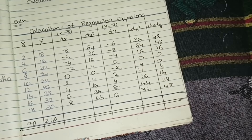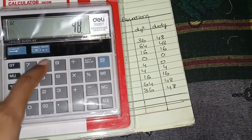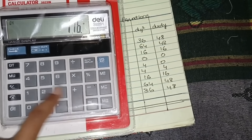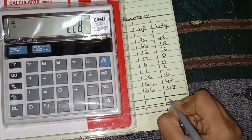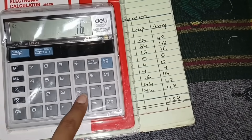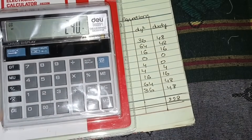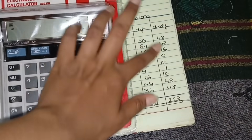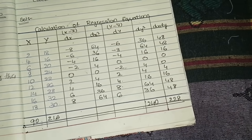Now total up all columns. Σ(dx·dy) = 48 + 48 + 16 + 0 + 0 + 4 + 16 + 48 + 48 = 228. Σ(dy²) = 36 + 64 + 16 + 0 + 4 + 4 + 16 + 64 + 36 = 240. Σ(dx²) = 64 + 36 + 16 + 4 + 0 + 4 + 16 + 36 + 64 = 240.